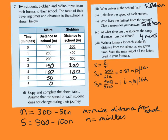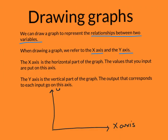Today we're going to start drawing linear functions. On a graph, the x-axis is the horizontal part — that's the flat part running along the bottom. The values that you input go on this axis; when looking at our question, time is what we input. The y-axis is the vertical part of the graph. The output that corresponds to each input goes on this axis.